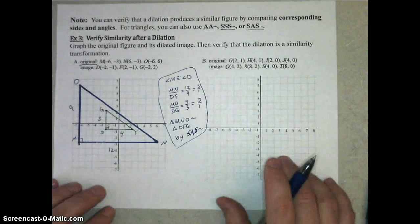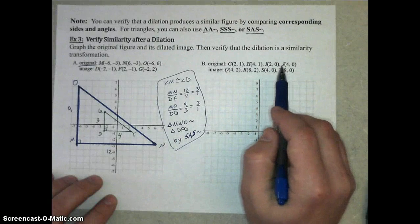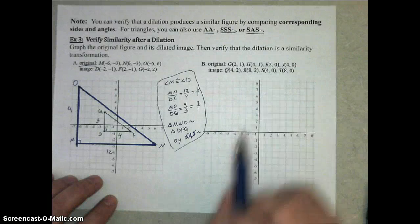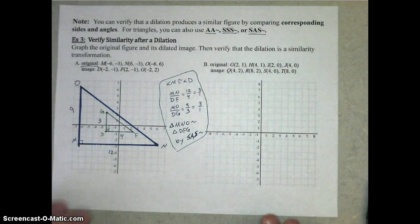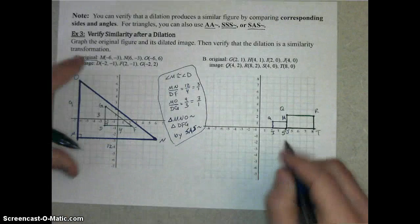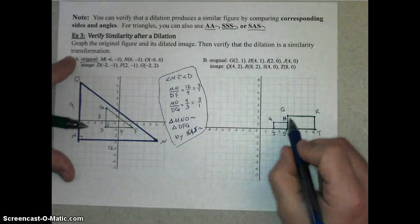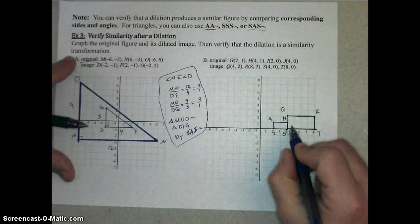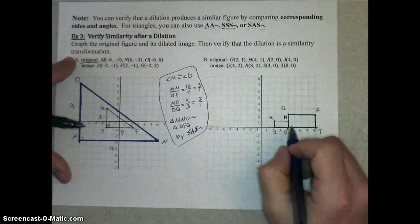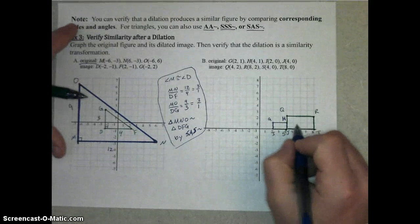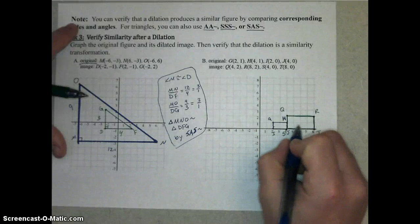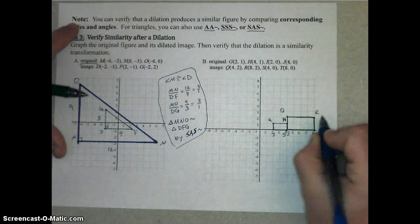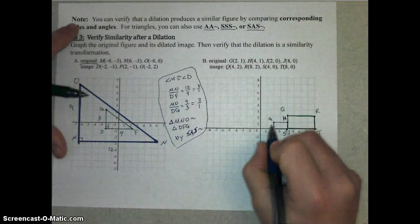On part B, plot the points for quadrilateral GHJI and quadrilateral QRTS. GHJI is the original and QRTS is the image after dilation. When graphed, GHJI is a rectangle and QRTS is also a rectangle. S and J share the same coordinates, so it appears to be an enlargement dilation with the center of dilation at the origin.